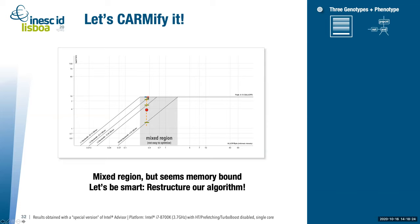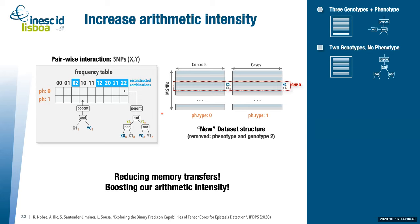We decided to be smart and try to increase arithmetic intensity by restructuring the code to move our point further right, becoming more compute bound with better performance potential. We realized we could remove the phenotype vector by splitting our dataset into two matrices — one for controls and one for cases. We also removed the third green vector (genotype 2), since it can be inferred from genotypes 0 and 1.